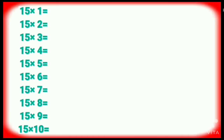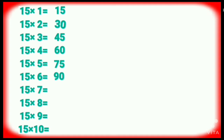Table of Fifteen. Fifteen ones are fifteen. Fifteen twos are thirty. Fifteen threes are forty-five. Fifteen fours are sixty. Fifteen fives are seventy-five. Fifteen sixes are ninety. Fifteen sevens are one zero five. Fifteen eights are one twenty. Fifteen nines are one thirty-five.